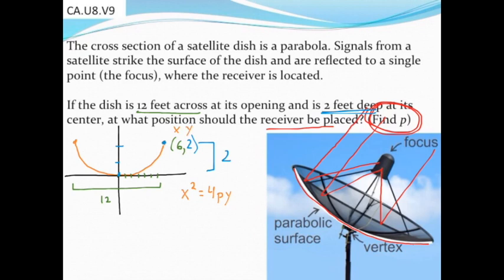Using this model, let's plug in our 6 and 2, which represent our x and y values, and we should be able to find p, the distance we're looking for. So 6² equals 4 times p times 2. You can see this is not a terrible equation to solve. 36 equals 8p. If I divide both sides by 8, I find that p equals 4.5.